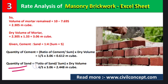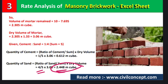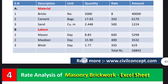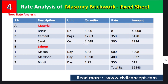For the quantity of sand, use the same formula but with the sand ratio of 4: (4/5) × 3.06 = 2.448 cubic meters. So we have 0.612 cubic meters of cement and 2.448 cubic meters of sand required to prepare mortar for the brick masonry.